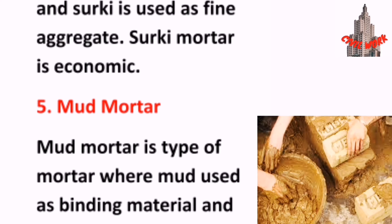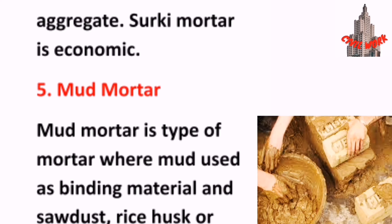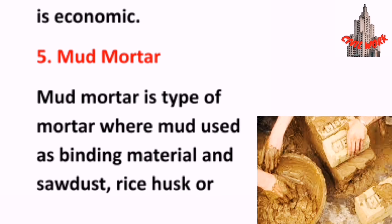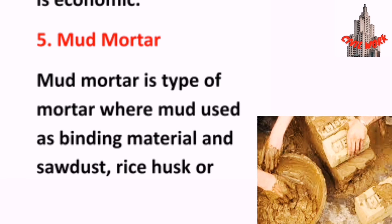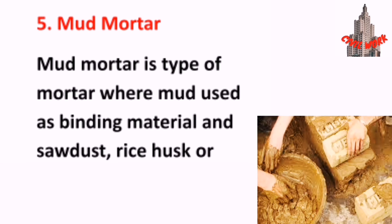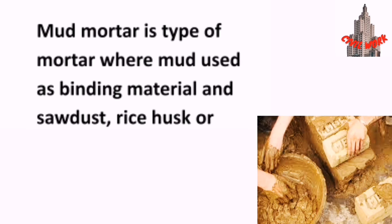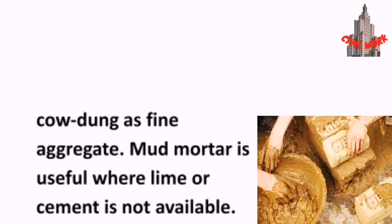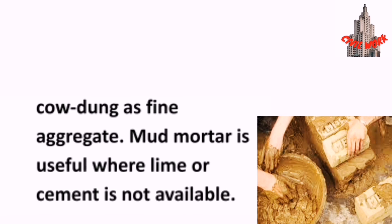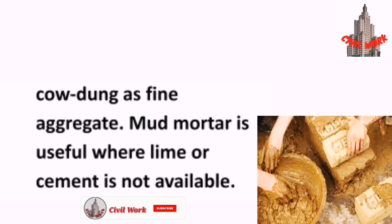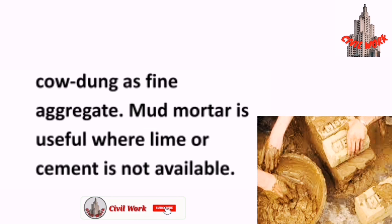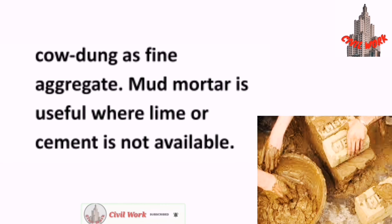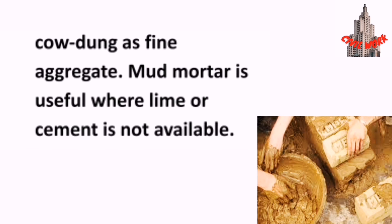Mud Mortar is a type of mortar where mud is used as binding material and sawdust, rice husk, or cow dung is used as fine aggregate. Mud Mortar is used in areas where cement is not available.